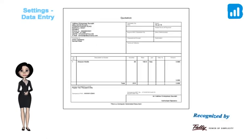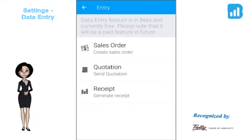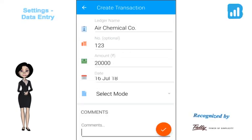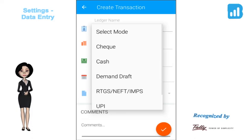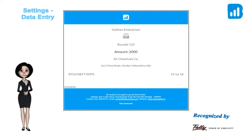Seen here is the sample quotation that is generated with BizAnalyst. The third feature is the receipt. Click on it to view and generate receipts. Create a new transaction by filling in the details. You could choose the mode of payment from check, cash, demand draft, RTGS, NEFT, IMPS, or UPI. Seen here is the receipt that is generated with BizAnalyst.